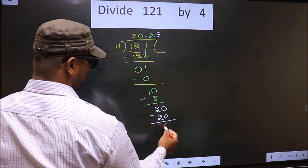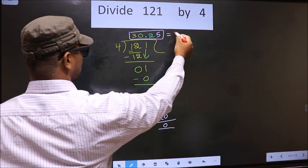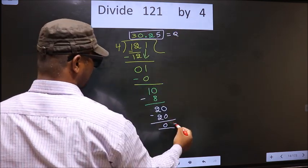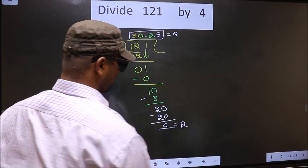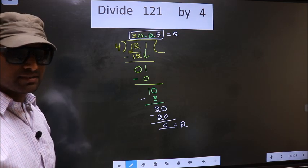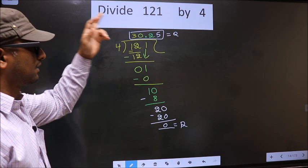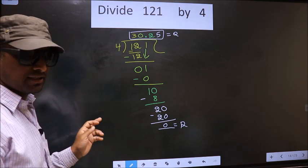Now you subtract. You get 0. This is our quotient, and this is our remainder. Did you understand where the mistake happens? You should not do that mistake. Am I clear?